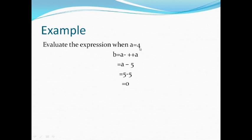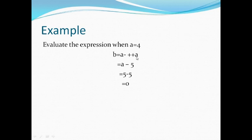Consider an example where a variable a is assigned the value 4. The expression is b = a - ++a. According to precedence, ++a has the highest precedence, so the value of a is incremented by 1, making a equal to 5. Then, the expression a - 5 is solved: since a is now 5, we get 5 - 5 = 0. Therefore, the value of b equals 0.